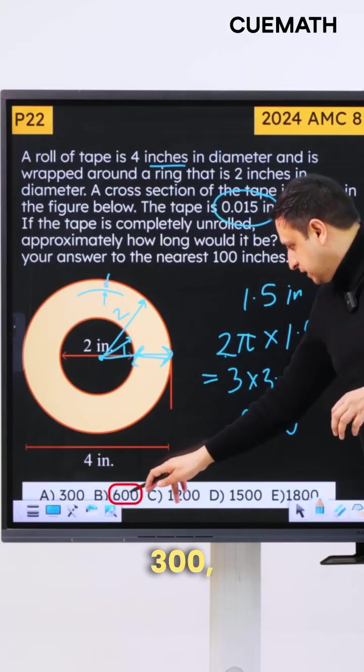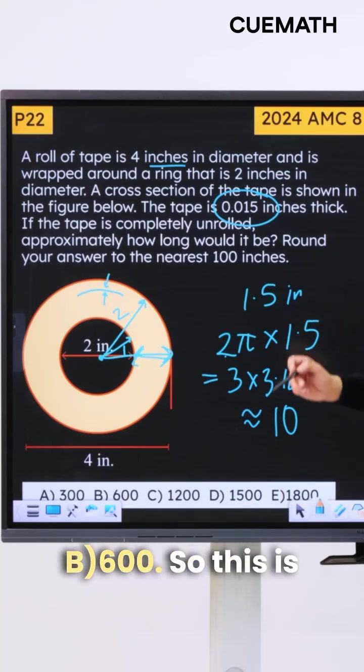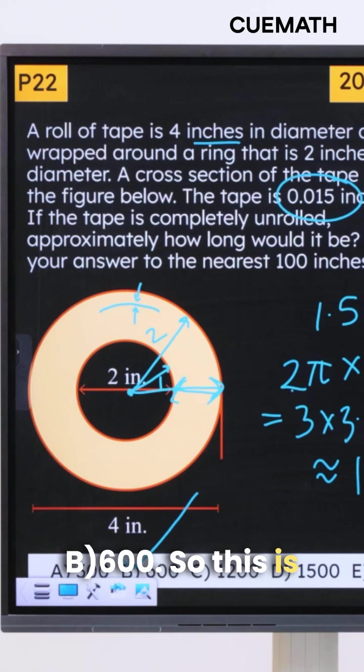So we have 300, 600, 1200, 1500, 1800. So it's clearly B, 600. So this is our answer.